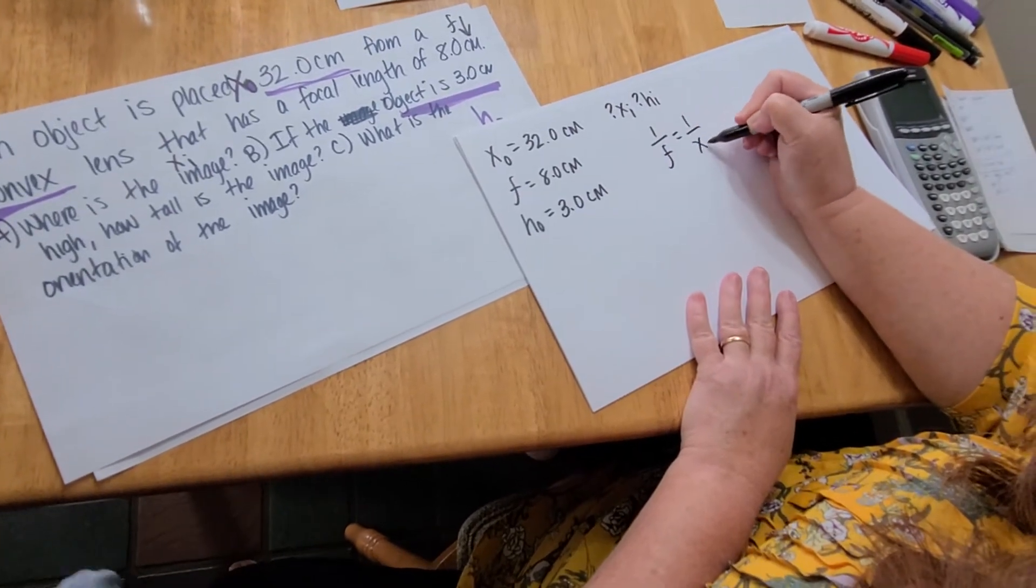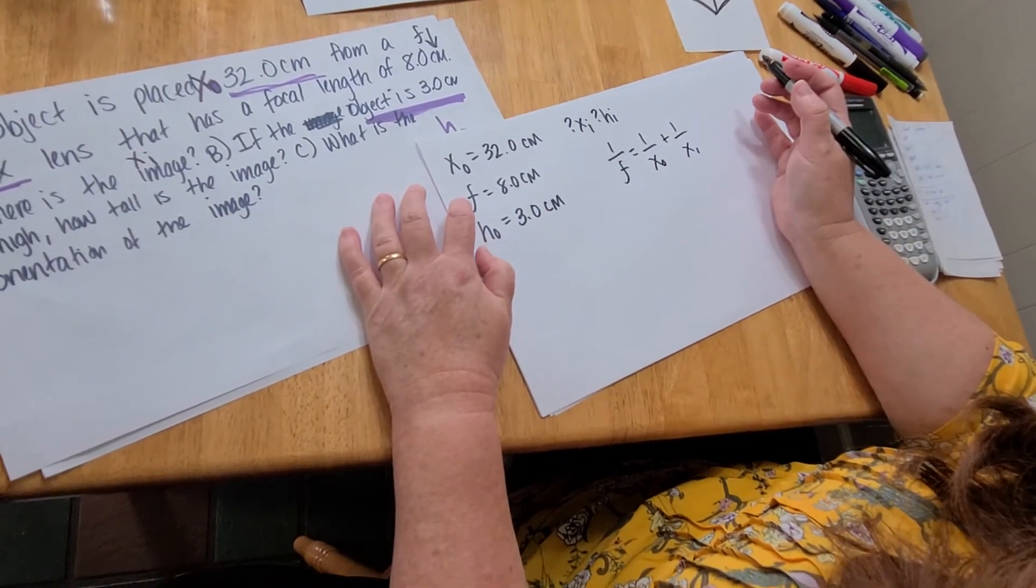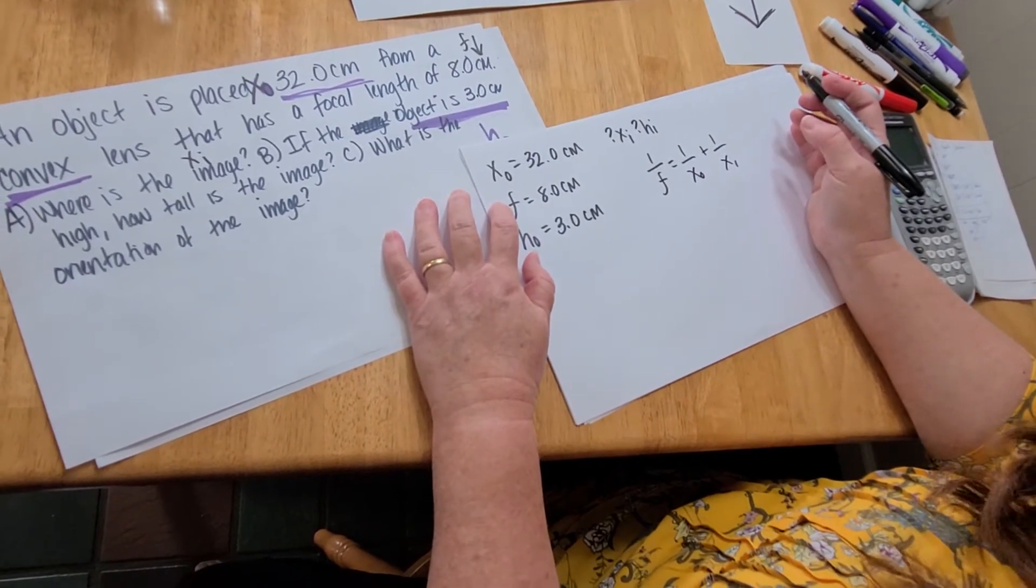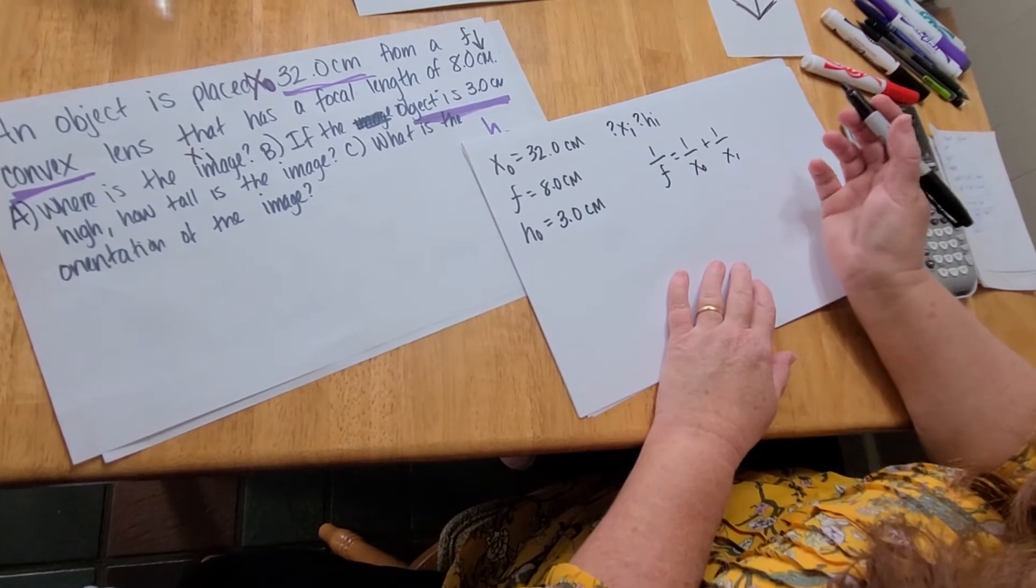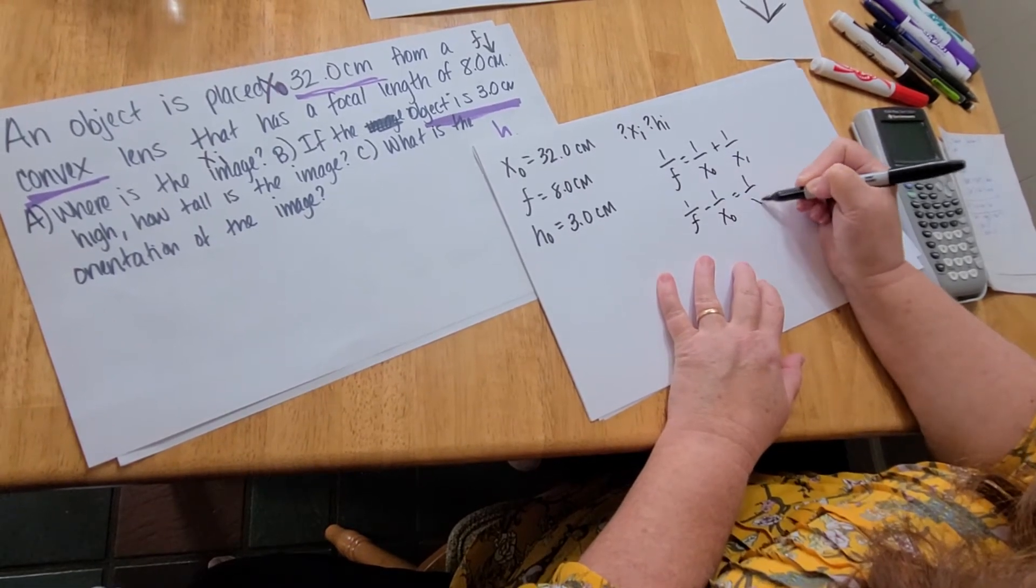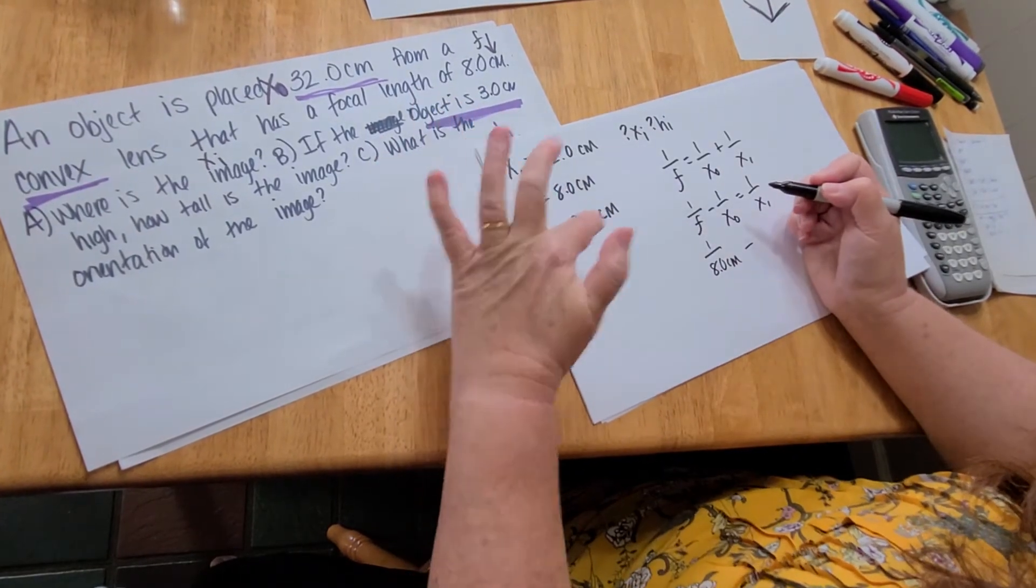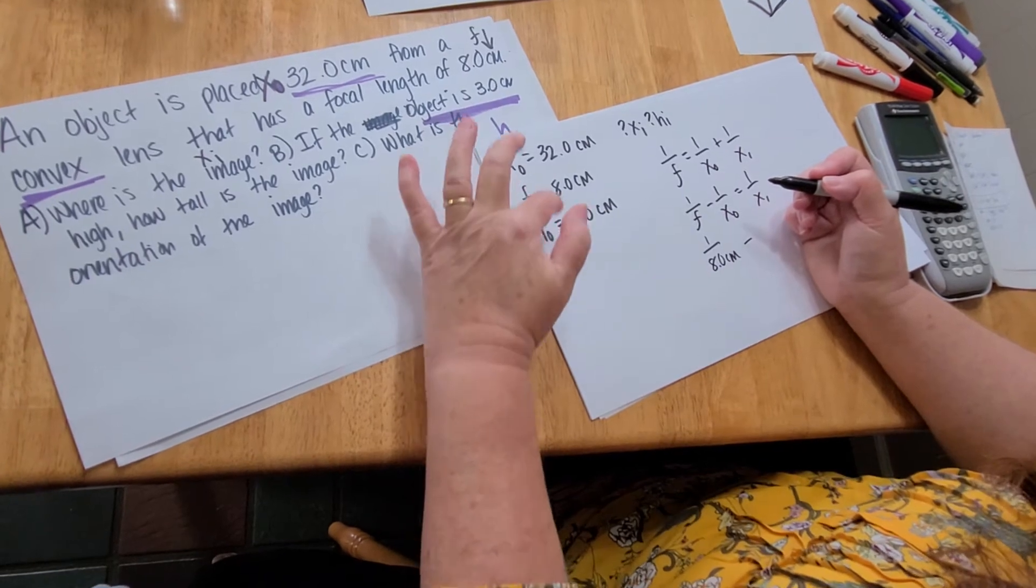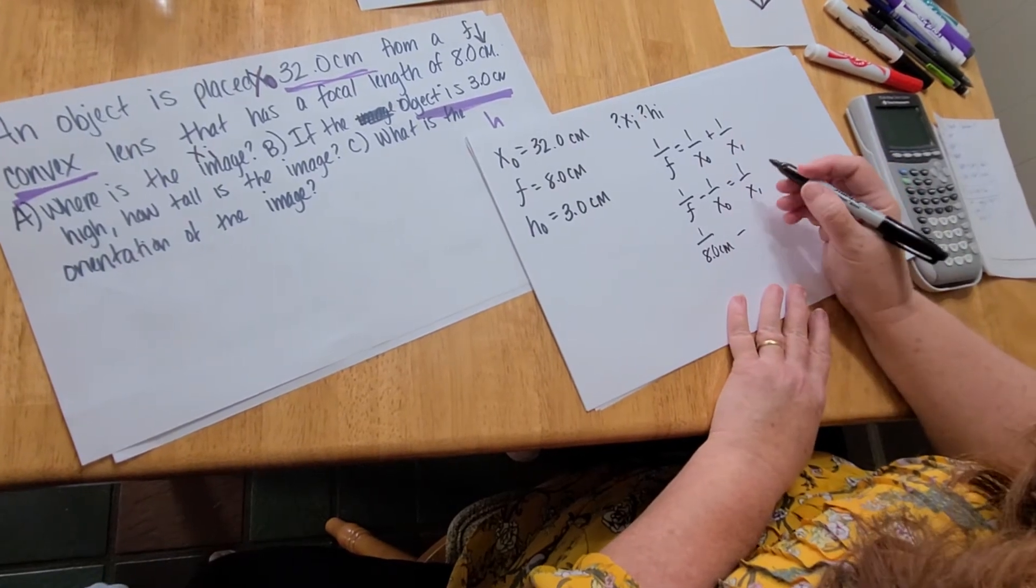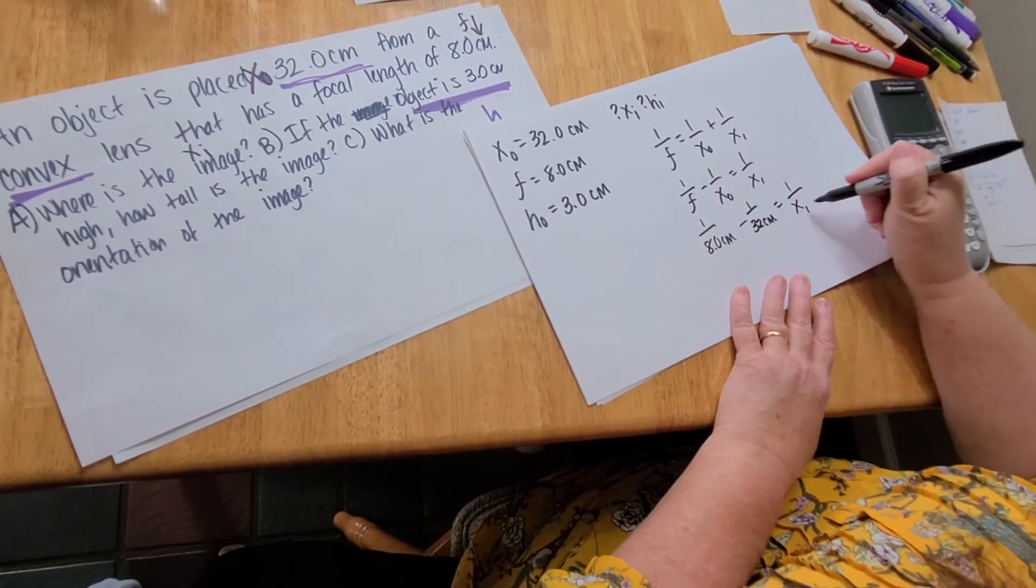First, I'm going to use the lens equation: 1/F = 1/XO + 1/XI. If this focal length were for a diverging or concave lens, I would make it negative. It's not for this one. I can either do a little bit of algebra or put the numbers in first. 1/F - 1/XO = 1/XI. Then I'm going to stick my numbers in: 1/8 centimeters minus 1/32 centimeters equals 1/XI.